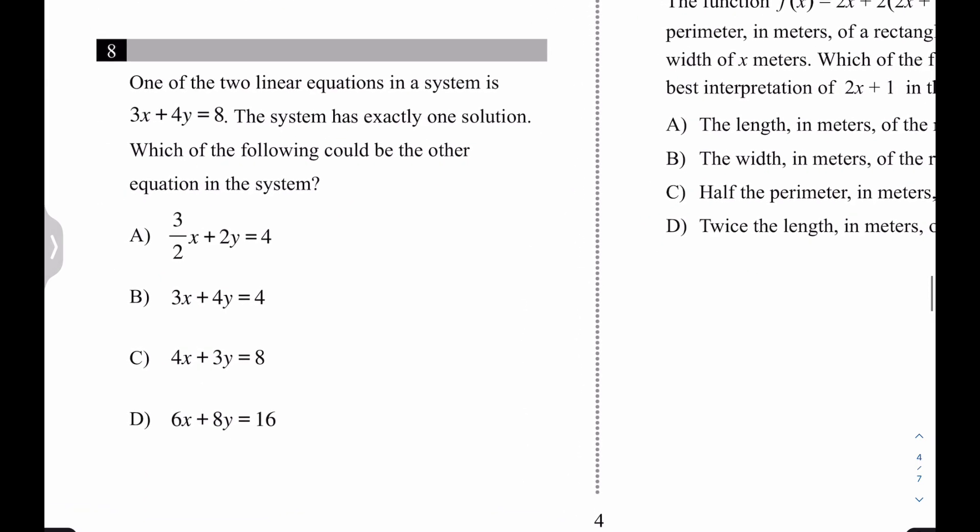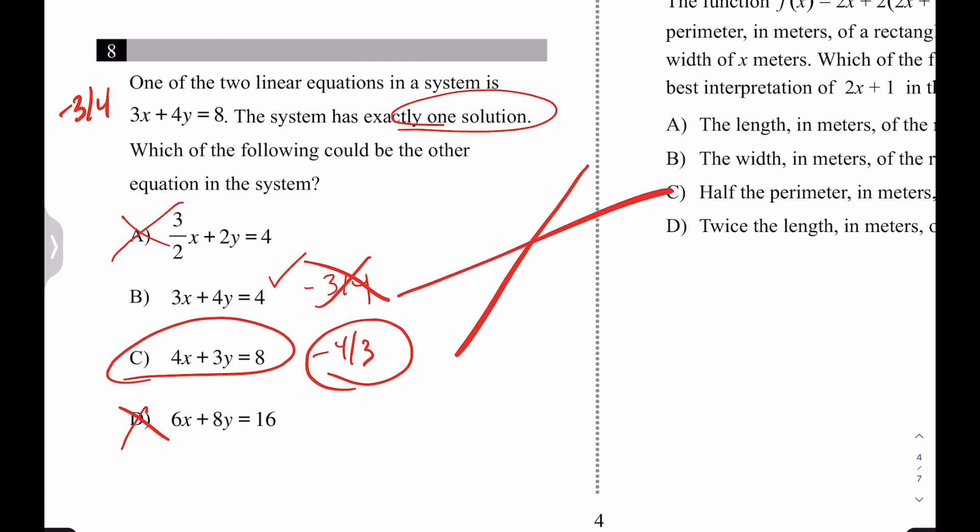What about number eight? Exactly one solution. So this slope is three-fourths. So we just want to avoid anything that also has a slope of three-fourths. Which of the following could be one of them. Yeah, the slope of this one is three-fourths. The slope of this one is negative three-fourths. The slope of this one is negative four-thirds. So B, it actually could be B. Oh, the slope of this one is negative three-fourths. Oh, it cannot be this. It can be this. Yeah, and it cannot be this. Yeah, the answer is C. You just want to pick the one that has a different slope. Because if they have different slopes, they're going to hit just once.